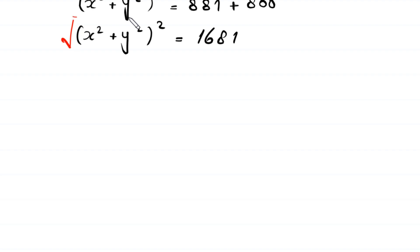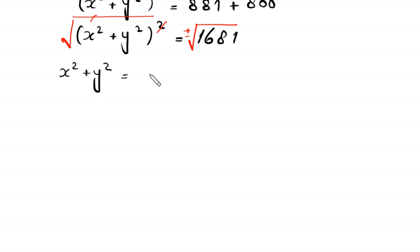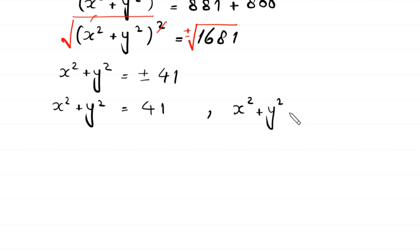Now we take the square root of both sides. This square will cancel with the square root, and we get two values: x squared plus y squared is equal to plus or minus 41. It means x squared plus y squared is equal to 41, and x squared plus y squared is equal to negative 41. Now, the square of any number is always positive, so x squared is greater than 0 and y squared is greater than 0, and the sum of two positive numbers cannot be negative. So we reject the negative value.